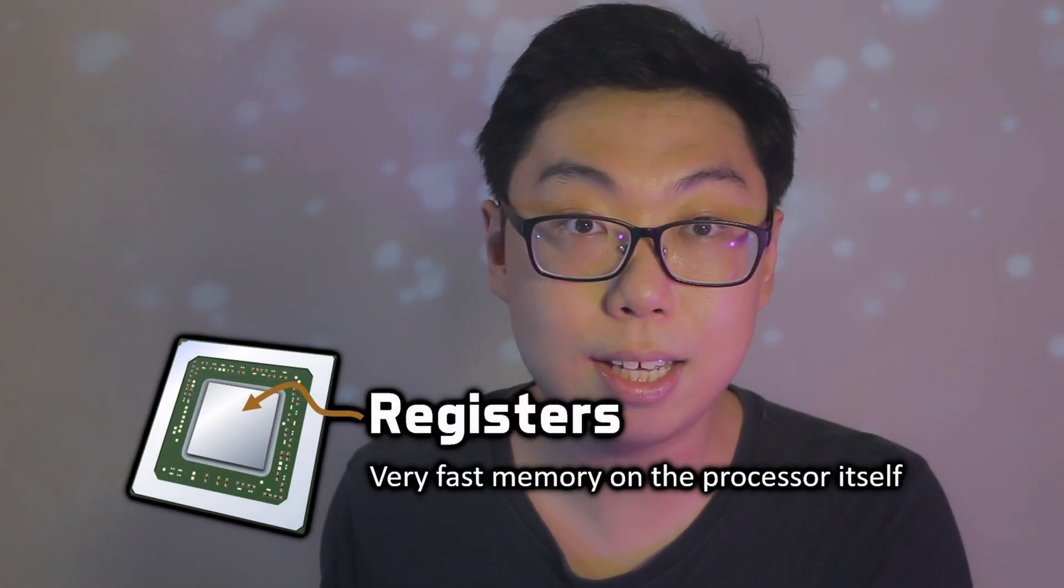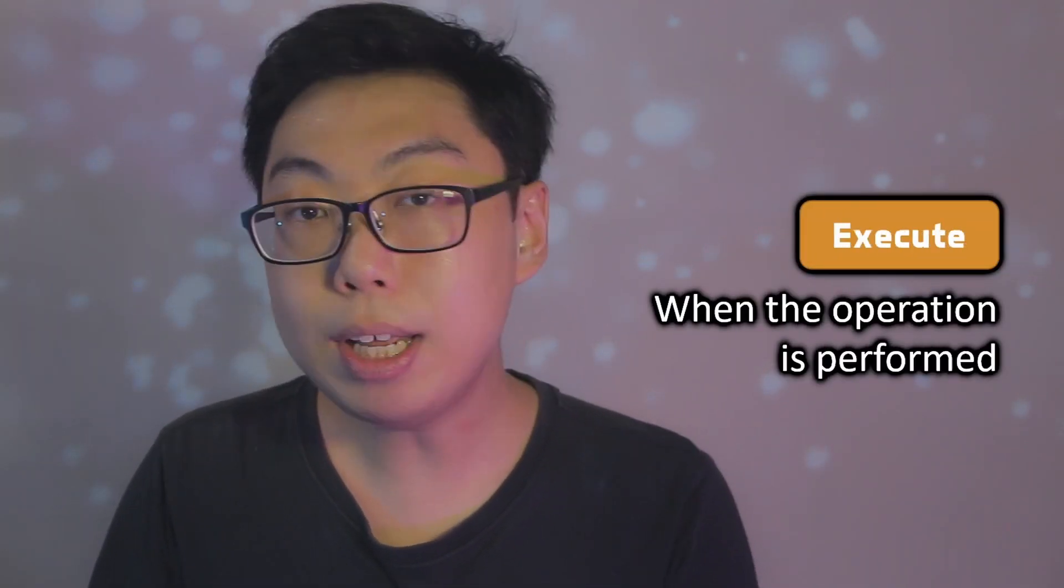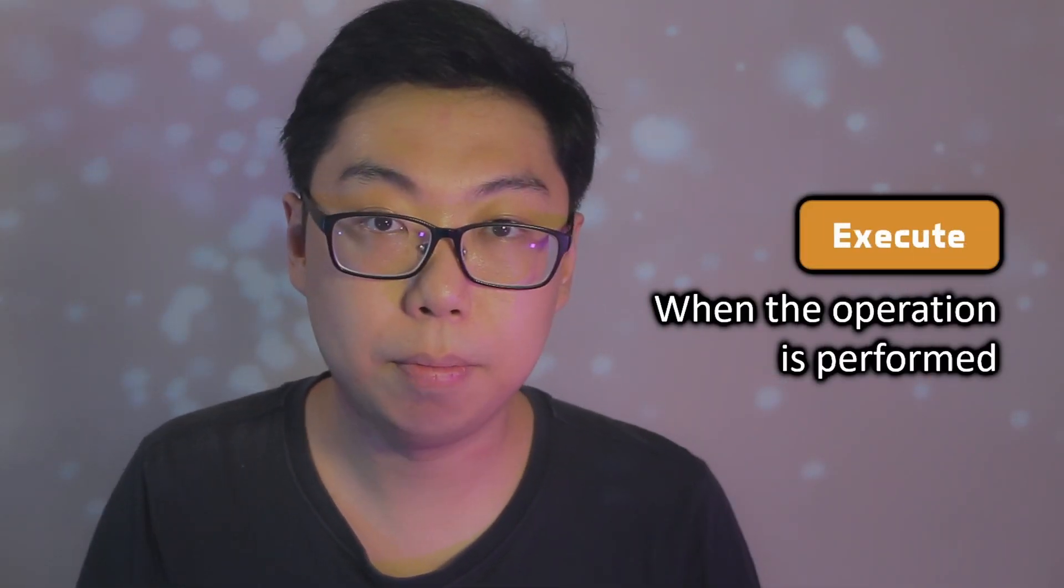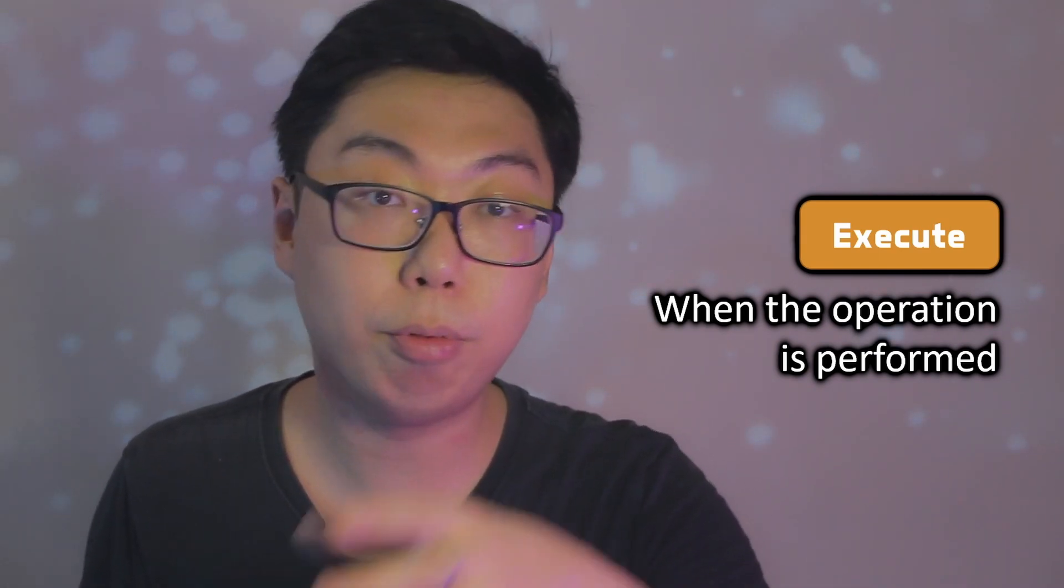The read step involves fetching the required operands in which the operation is meant to act on. For example, if you have an addition operation between two numbers held in two registers, that is, little banks of memory that live directly on the CPU, this is where we visit the two registers to retrieve those values. Now that we know what we want to do, and we have the required information to operate on, we can proceed to the execution step. That is when the operation is actually done. So whatever calculation or comparison takes place, and the result is ready for the next step.